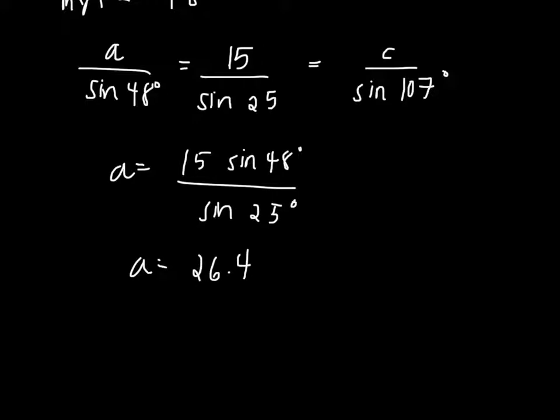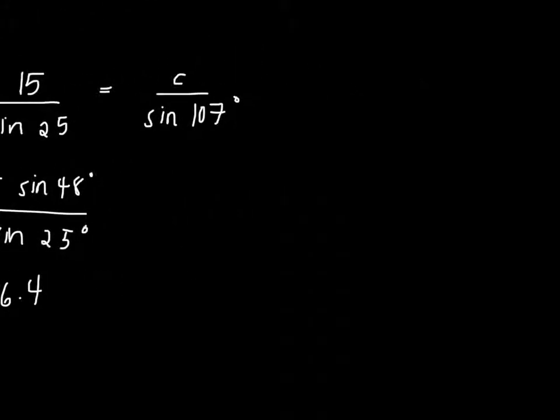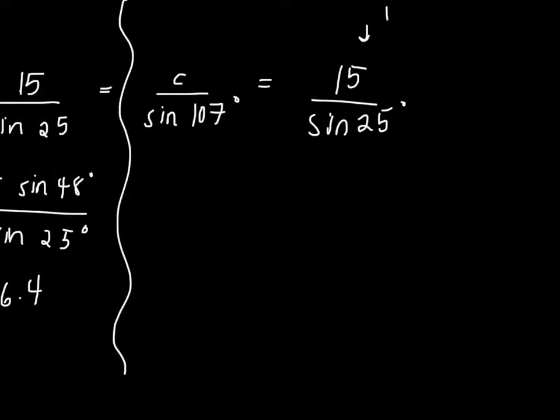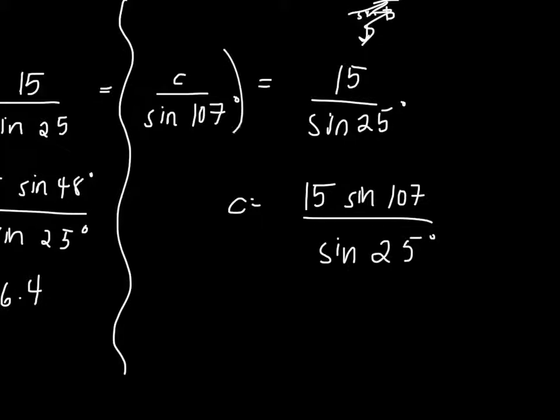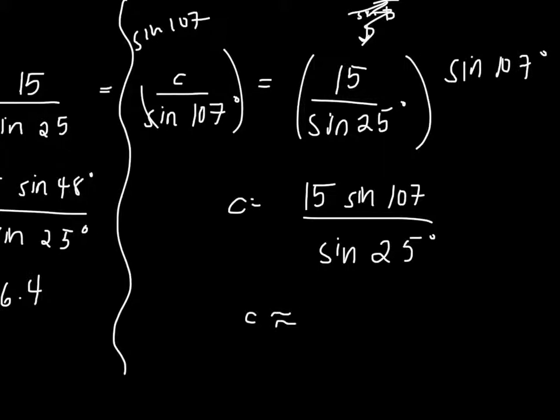Now we solve the c side of this law, and we get 15 over sine 25, which is the b over sine B part. And simplified, we get 15 sine 107 over sine 25. And I'm getting this from the fact that we're multiplying both sides by sine 107 to get c by itself. This is why we have 15 sine 107. And we simplify this to get 33.9.